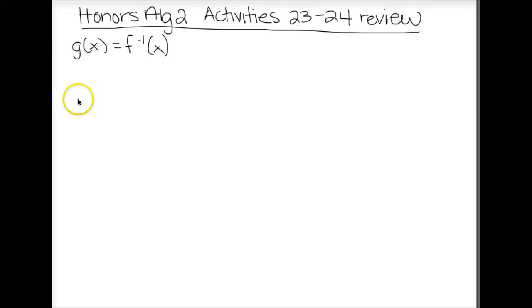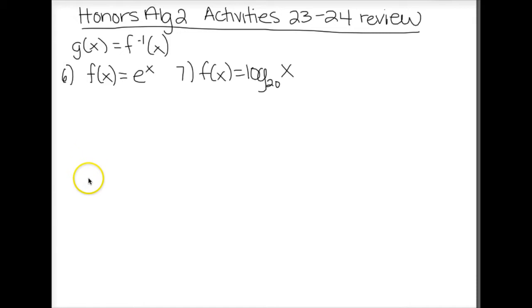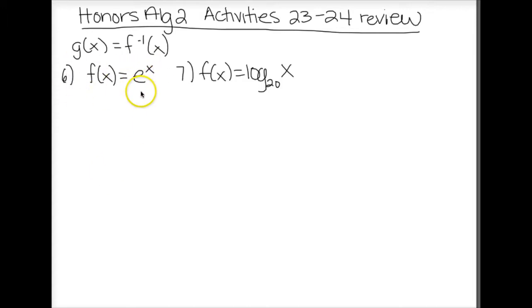We'll look at number 6, where the original was f of x equals e to the x, and also number 7, which was f of x equals log base 20 of x. There's not much work to show per se — some of these are really just intuitive because of our inverse property. Our original in number 6 is an exponential, and we know that the inverse of an exponential has to be a logarithm.